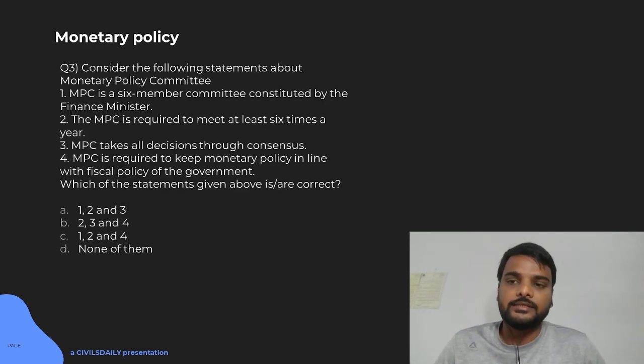Moving on to the next question, that is again on the monetary policy committee. It says that MPC is a six member committee constituted by the finance minister. We know that RBI is an independent body from the government or finance ministry. So, first will not be true. Two, MPC is required to meet at least six times a year. Now, we are following a monetary policy where RBI MPC is supposed to meet four times in a year.